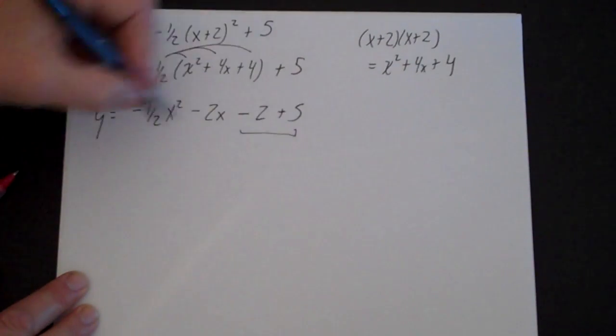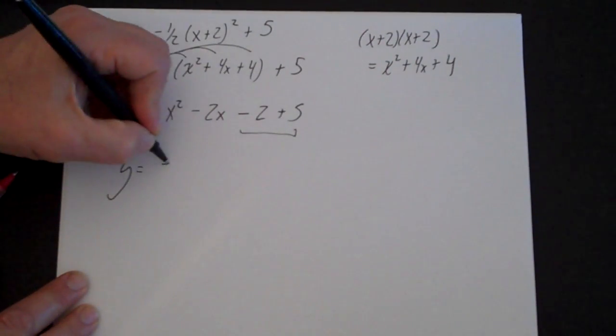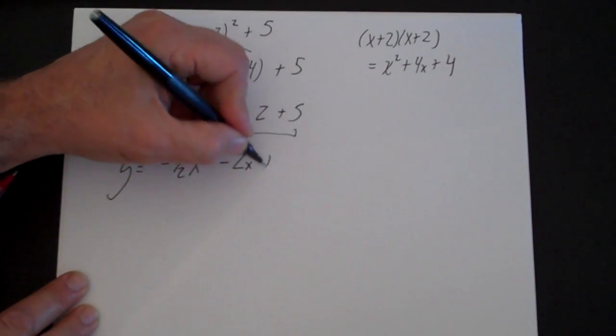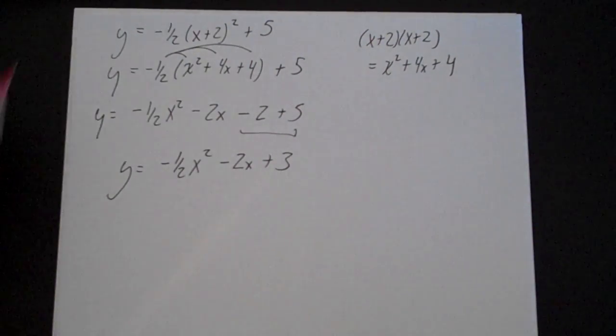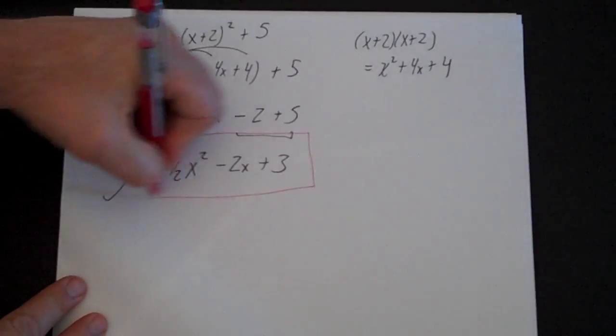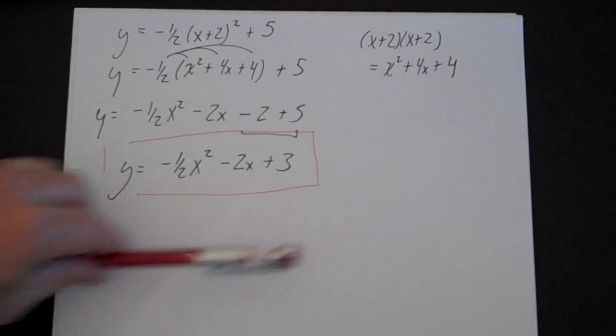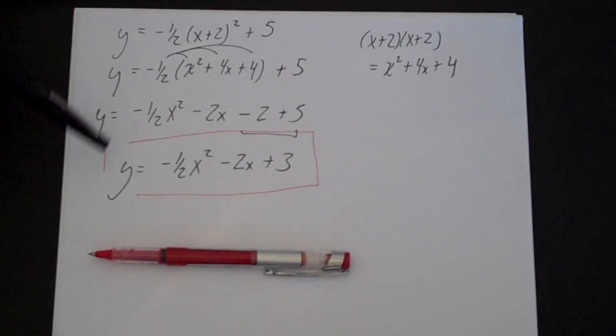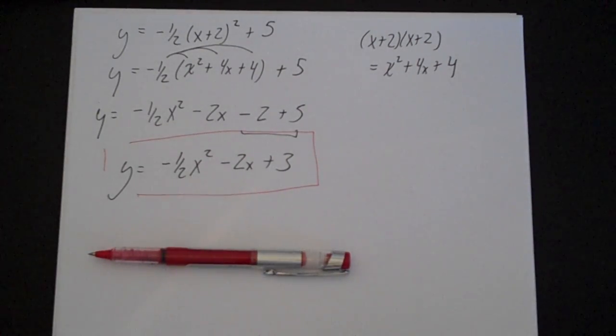Combine the like terms and I get y = -1/2x² - 2x + 3. And that is my final answer. Now whether you want it in vertex form or whether you want it in standard form, both answers are correct. It just depends on which one is asked for.